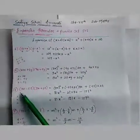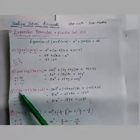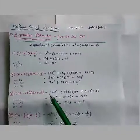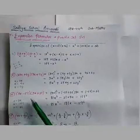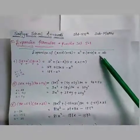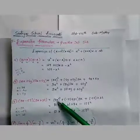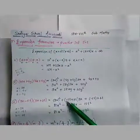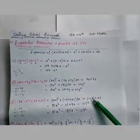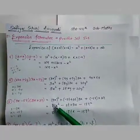Now we are solving 6th question: (9x-5t)(9x+3t). Here x is 9x, a is minus 5t, and b is 3t. Now we will put these values in our formula: x² + (a+b)x + ab. So x² is (9x)² = 81x². Plus a+b: a hamara minus 5t tha aur b 3t tha. Then into x that is 9x. Plus a into b: a hai minus 5t aur b hai 3t.